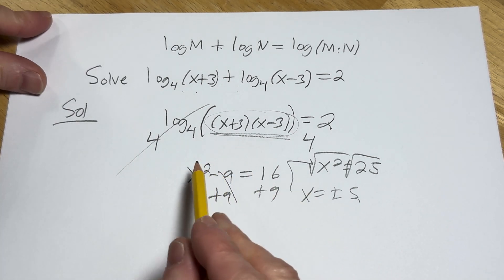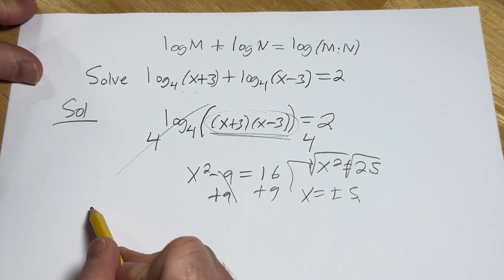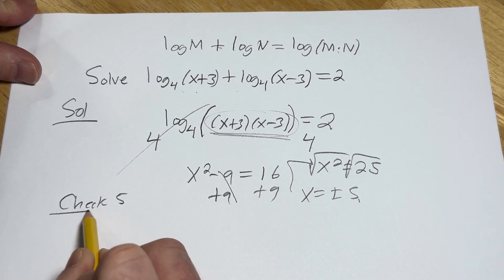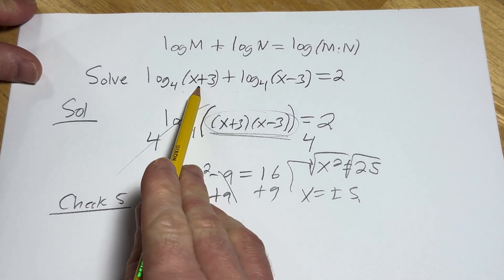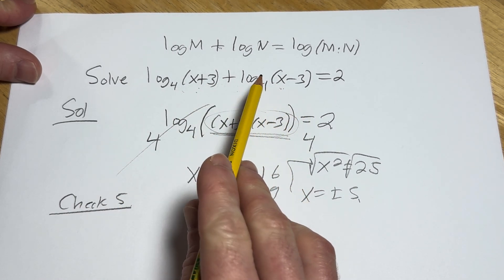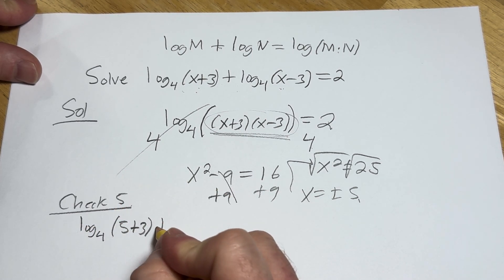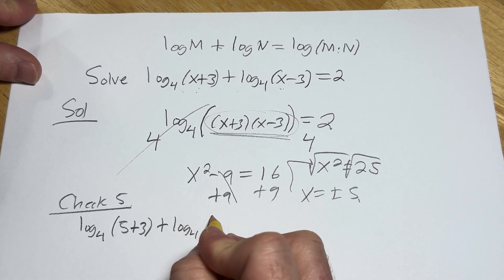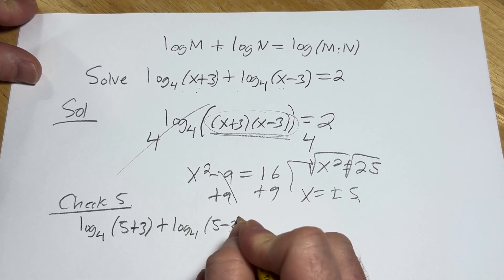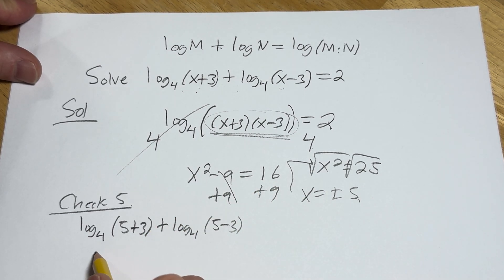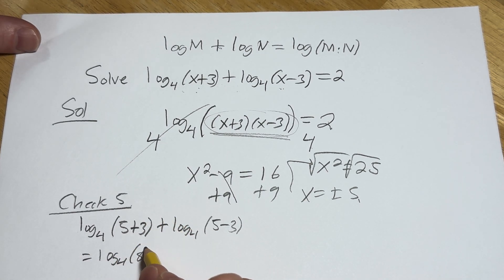Let's go ahead and check our answers to this problem. So let's check 5. Checking 5, we put the 5 where the x is in the original equation. So it'll be log base 4 of 5 plus 3 plus log base 4 of 5 minus 3. So what's that going to be?